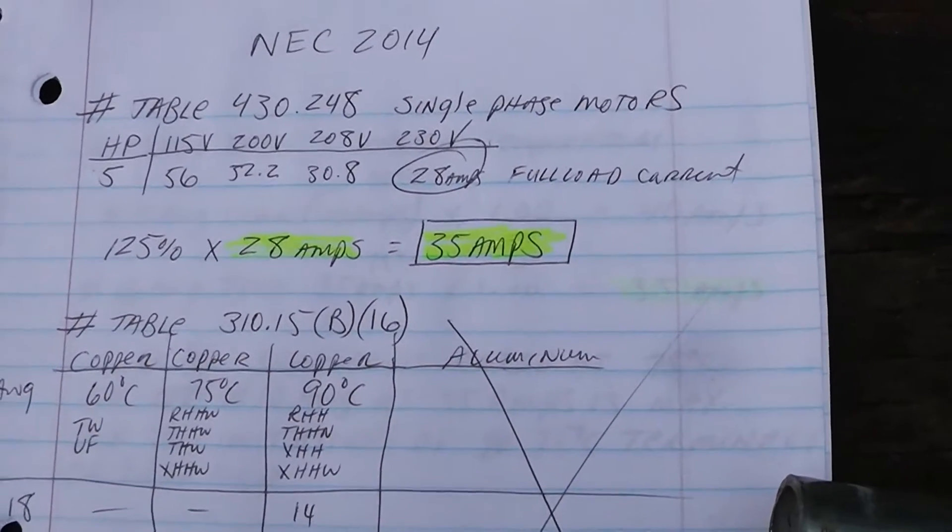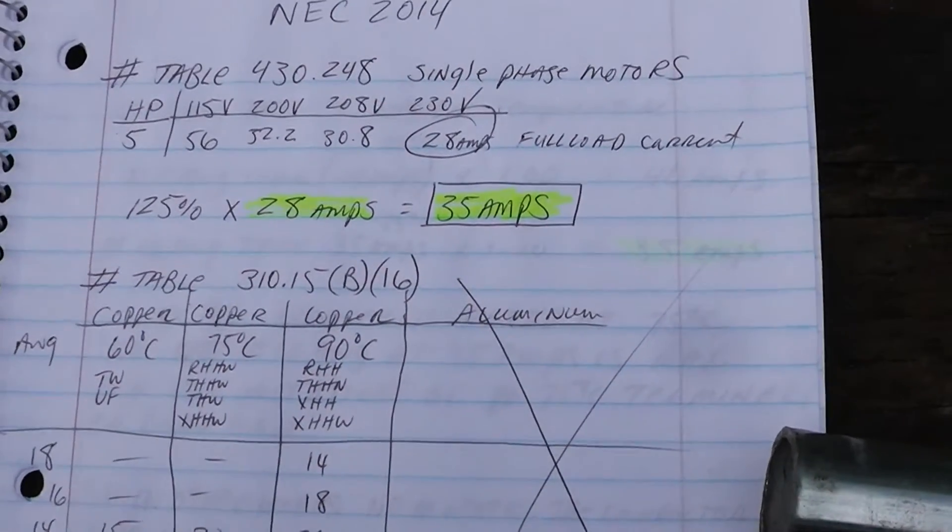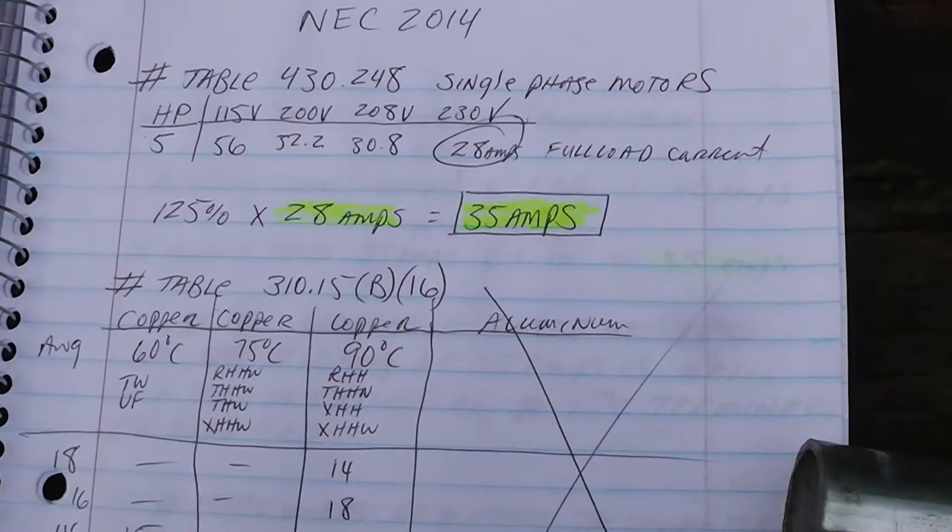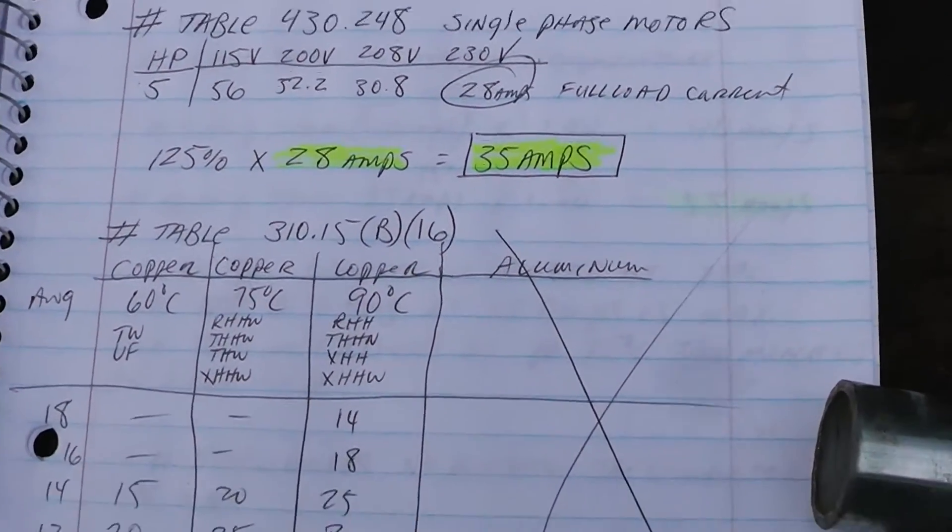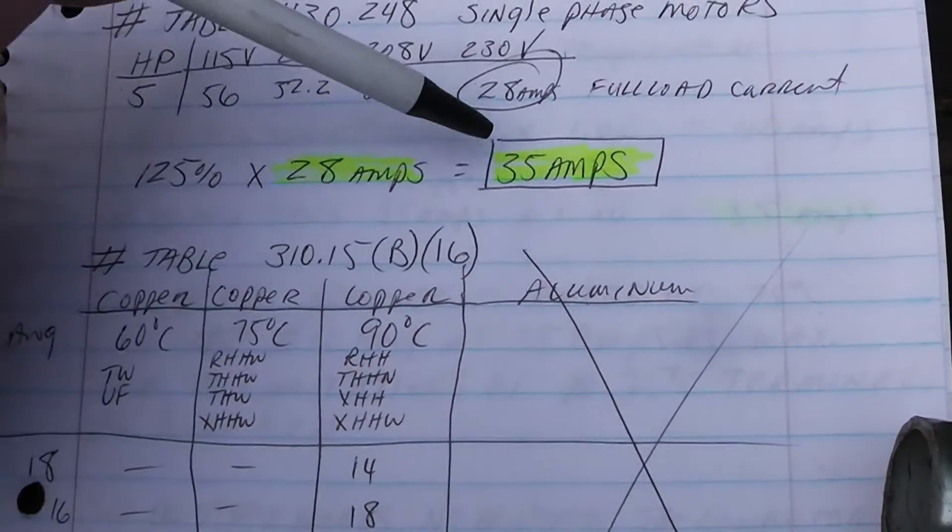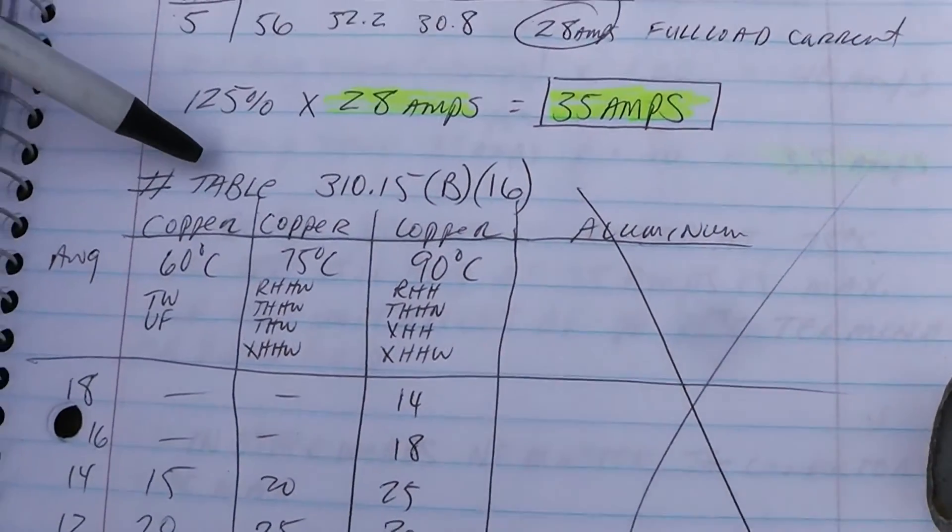Our wire has to be rated for a minimum of 35 amps. If you want to run some four aught cable, the National Electric Code is not going to have a problem with that. You can always exceed - this is the minimum requirements.